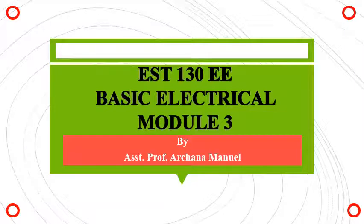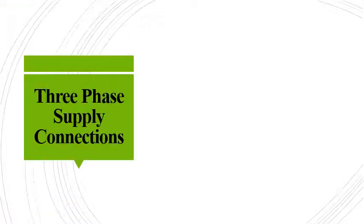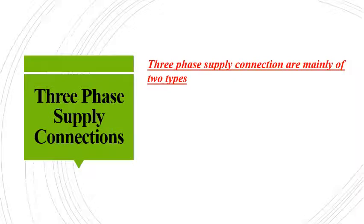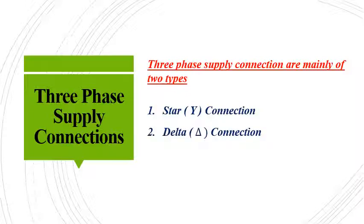Welcome to the ninth video lecture on module 3 of basic electrical. In this we are going to see in detail about three-phase supply connections. We know that in a three-phase system we are having three phases or three sets of coils. These coils can be connected in two ways: one is known as the star connection and the second one is known as the delta connection. Let's see each of these connections in detail.